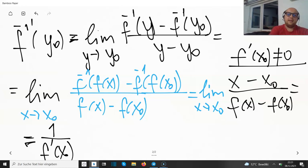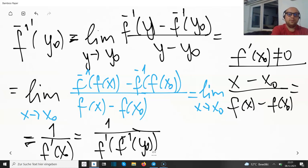And now we're almost done. We have 1 divided over f', but what is actually x₀? This is the inverse at y₀. And this is the formula that we wanted to prove. We started here and we finished there.